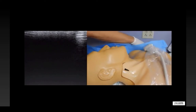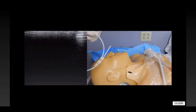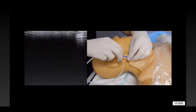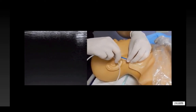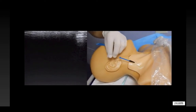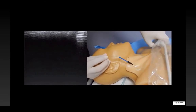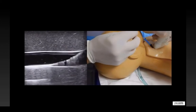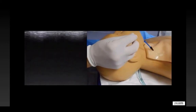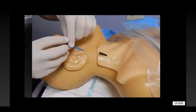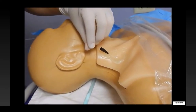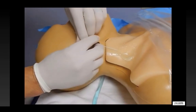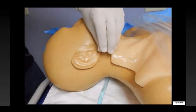This can be left as what some call an easy IJ and used as access itself. To move to a central line, we then place a wire through the catheter. You'll see the provider then uses his probe in an in-line approach to visualize the wire within the vessel lumen. Once the wire is in place, the catheter can be removed.